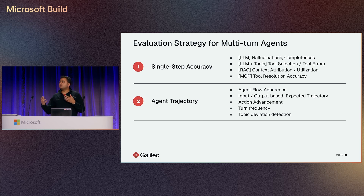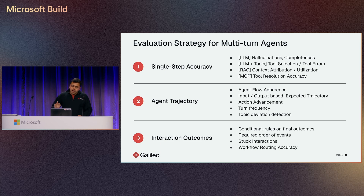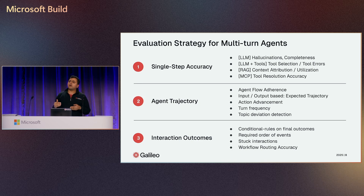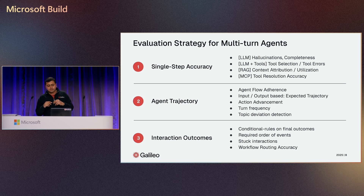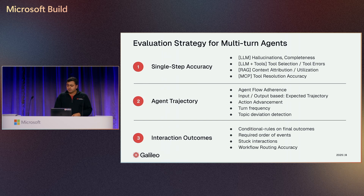Topic deviation and detection: sometimes an agent might just deviate and say, 'by the way, in Japan there's also these other things you could look at' — and that's not what I want. I don't have kids and wouldn't go to Disneyland there, so why is it deviating from the topic? Interaction outcomes are outcome-based metrics — can we have conditional rules on the final outcomes? Just getting an email from my reservation agent saying my reservation is done isn't enough. Did it call the right tools and make the right calls internally? What's the required order of events? Stuck interactions is also an outcome-based metric. And workflow routing accuracy: based on which route is it taking — from the planner agent to the reservation agent, or to some other agent it shouldn't be calling?